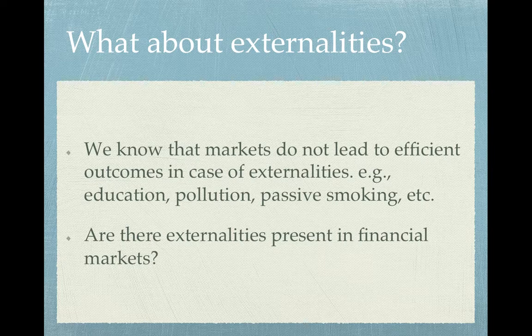In general, markets are prone to failures, and one reason is because of externalities. An externality is a situation where the participants in a market transaction fail to account for all costs and benefits. In other words, there is a third party which is not part of the transaction between the firm and the consumer but is affected either negatively or positively by the transaction. In that case, markets do not perform efficiently — the market allocation is not an efficient one.